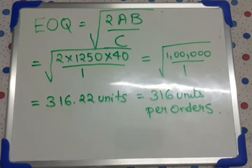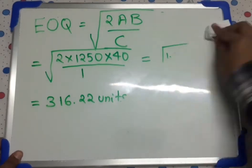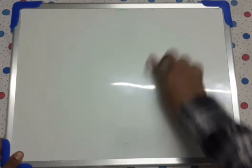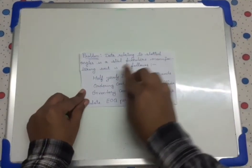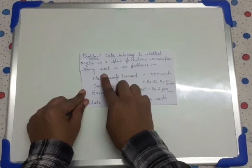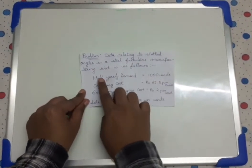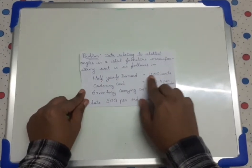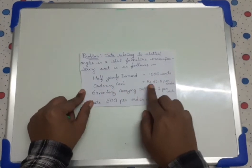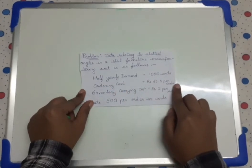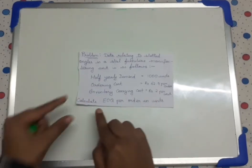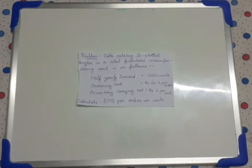Now let's solve another problem. The question is again given in the description. The next question is: data relating to slotted angles in a steel furniture manufacturing unit is as follows. Half yearly demand is equal to 1000 units, ordering cost is equal to rupees 62.5 per order, inventory carrying cost is equal to rupees 2 per unit. We have to calculate the EOQ per order in units.